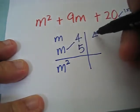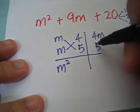m squared is same as m times m, which should give us m squared. 20, we can try 4 times 5. m times 4, give us 4m. m times 5, 5m.